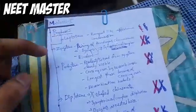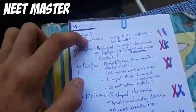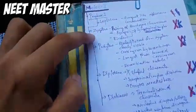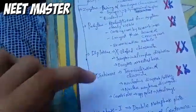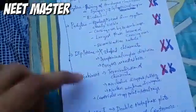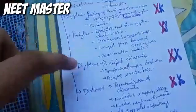There are five stages. The first is Leptotene, then Zygotene, then Pachytene, Diplotene, and Diakinesis. We're going to discuss all these same stages.